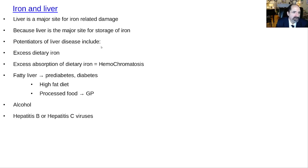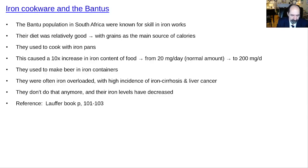Potentiators of liver disease include dietary iron, excess dietary fat — especially for hemochromatosis patients where heme iron from meat is absorbed in large amounts — plus fatty liver, alcohol, and hepatitis B and C infections. Regarding iron cookware: the Bantus in South Africa used to cook with iron pans and make beer in iron containers, bumping dietary iron from a normal 20 mg/day up to 200 mg/day. Once they stopped, their condition improved significantly.